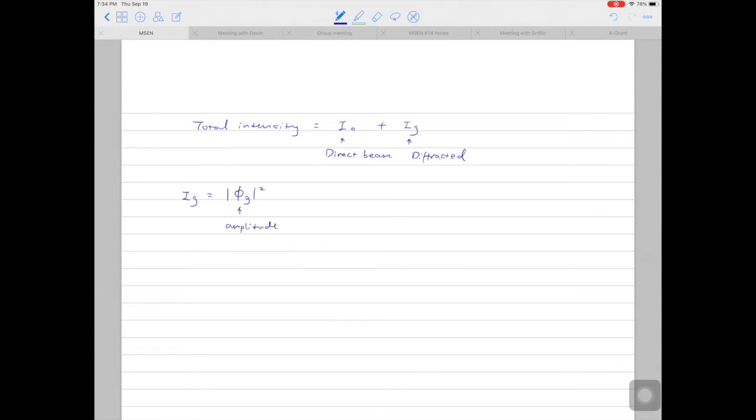So phi G is the amplitude of the diffracted beam. Amplitude of the diffracted beam squared is equal to the intensity of the diffracted beam.